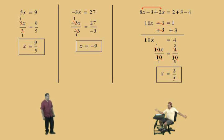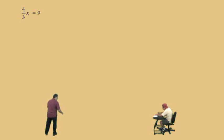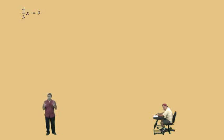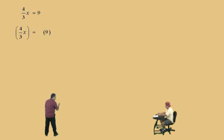That was a tough one. Let's do some more. Here we go, Charlie. 4 thirds x equals 9. Now here we're going to use what we call the reciprocal approach, meaning we're going to multiply both sides by the reciprocal, because when you multiply reciprocals together, that gives you 1. We have 4 thirds x equals 9. Charlie, what's the reciprocal of 4 over 3?